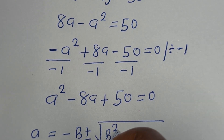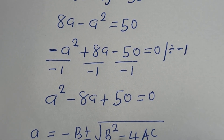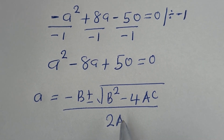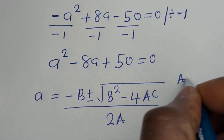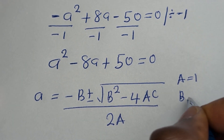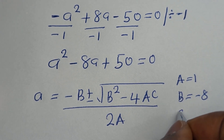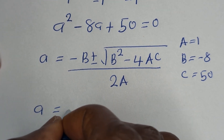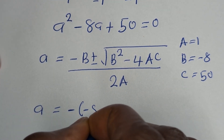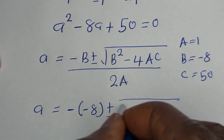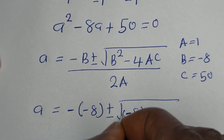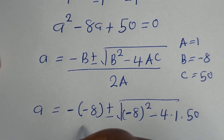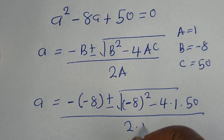This is a quadratic equation; let us solve this equation. A is equal to minus bracket minus 8 plus or minus square root of (minus 8) squared minus 4 multiplied by 1 multiplied by 50, divided by 2 multiplied by 1.